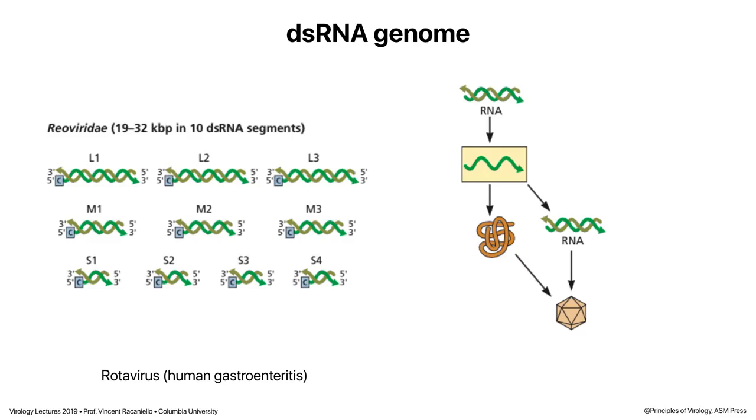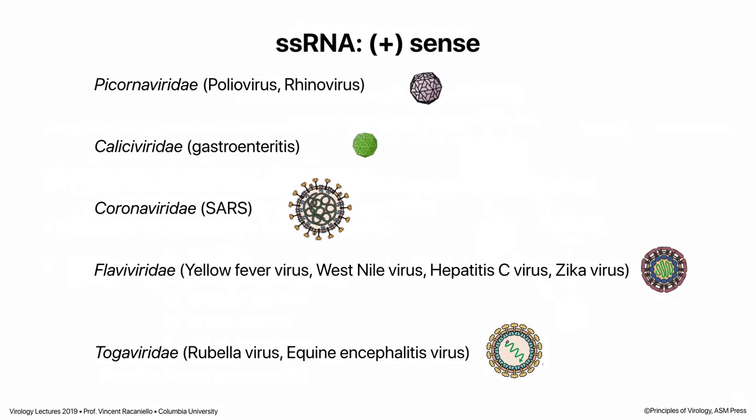Now we come to what I think is the most beautiful strategy — plus-sense RNA. There are many viruses on the planet with plus-sense RNA genomes: picornaviruses like poliovirus and rhinovirus, caliciviruses, coronaviruses including SARS and MERS, flaviviruses — yellow fever, West Nile, hepatitis C, Zika — and togaviruses. Beautiful strategy: the RNA gets into the cell and is immediately translated. You do not need a polymerase in the particle. As soon as the RNA gets in the cell, it makes all the proteins it needs, including the RNA polymerase for replication.